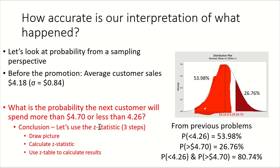We've come a really long way now. We've started thinking about a normal distribution, Z values, and what's the probability that something is going to occur just based on the normal distribution instead of based on the overall sales.